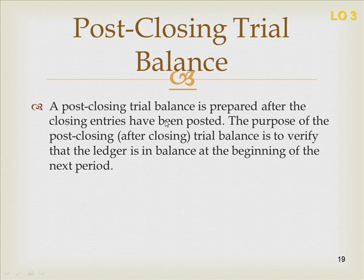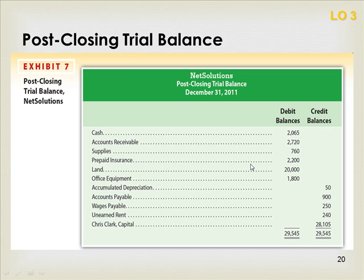The post-closing trial balance is prepared after the closing entries have been posted. Its purpose is to verify that the ledger is still in balance at the beginning of the next period. After posting all closing entries, we look at all accounts that are still open — which are permanent accounts — and list them in a post-closing trial balance to determine if we have debit-credit equality. You start with the company name, the title 'Post-Closing Trial Balance,' the date, then list assets, liabilities, and the capital account. Once debits and credits are equal, the post-closing trial balance is balanced.